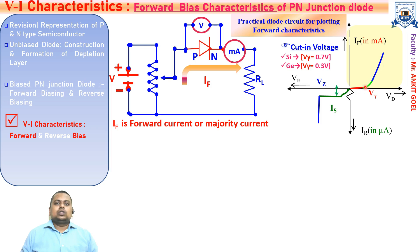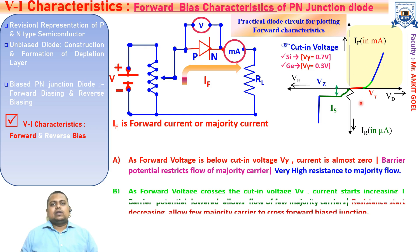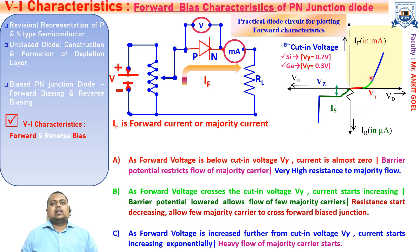We can divide the forward bias characteristic into three regions shown in red, green, and blue colors. In the first region, when the voltage across the P-N junction diode is below the cut-in voltage, the current is almost zero — there will be no majority current flow because the barrier potential restricts the majority carriers and offers very high resistance. As we approach the cut-in voltage, the current starts increasing and there is a non-linear relationship between voltage and current — a few majority carriers cross the junction. As soon as the forward bias voltage exceeds the cut-in voltage, there is a sharp rise in the forward current with a very heavy flow of majority carriers through the junction.